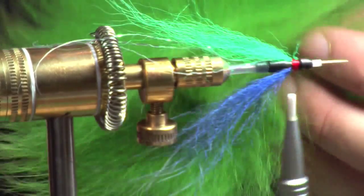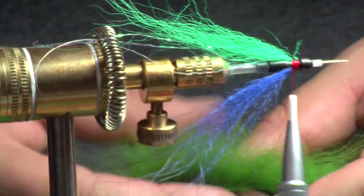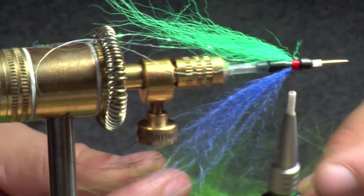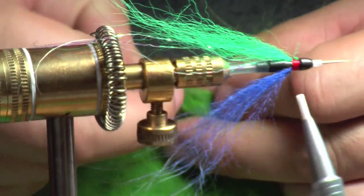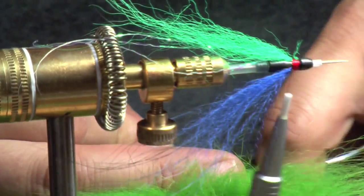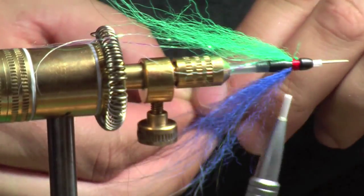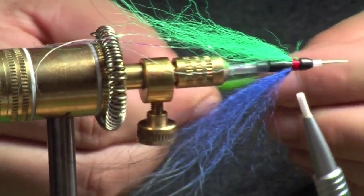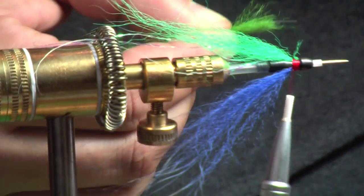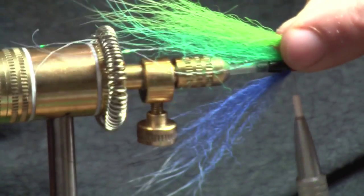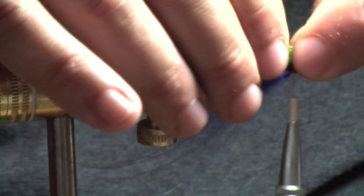I might add one final color, I believe this is Highland Green arctic fox. Arctic fox is durable, natural, and has got some great movement in the water. Pull the underfur out and attach it to the top.